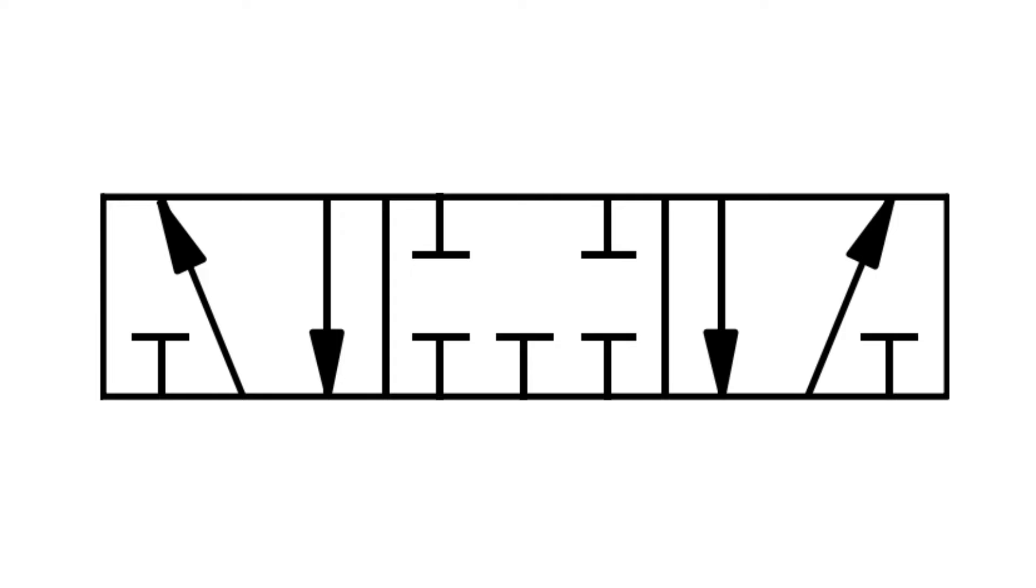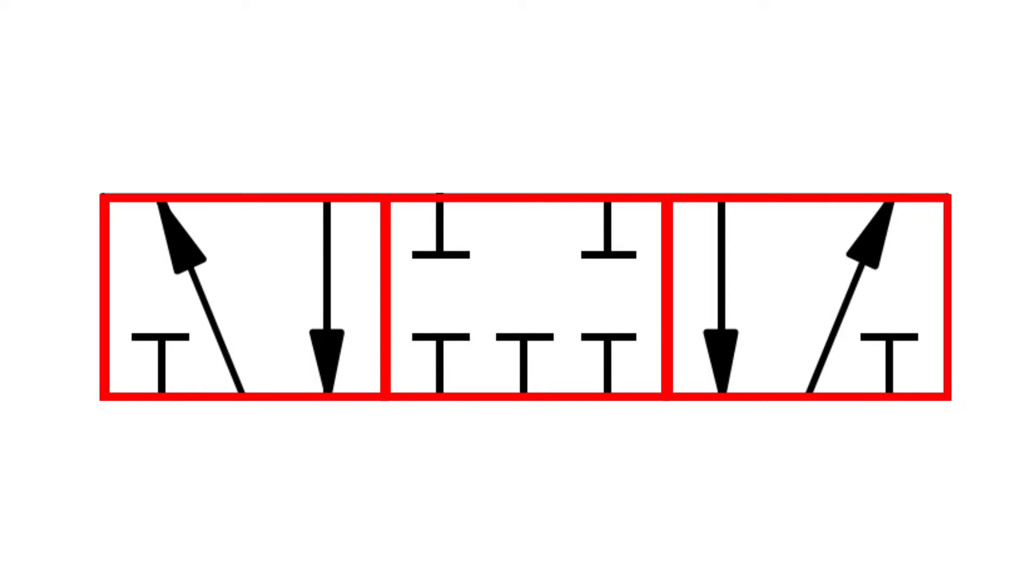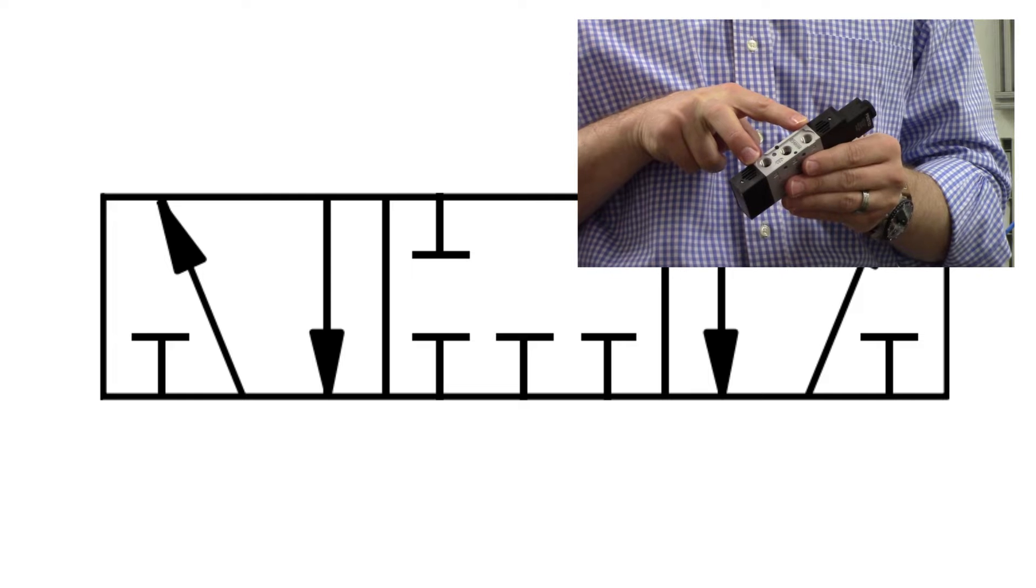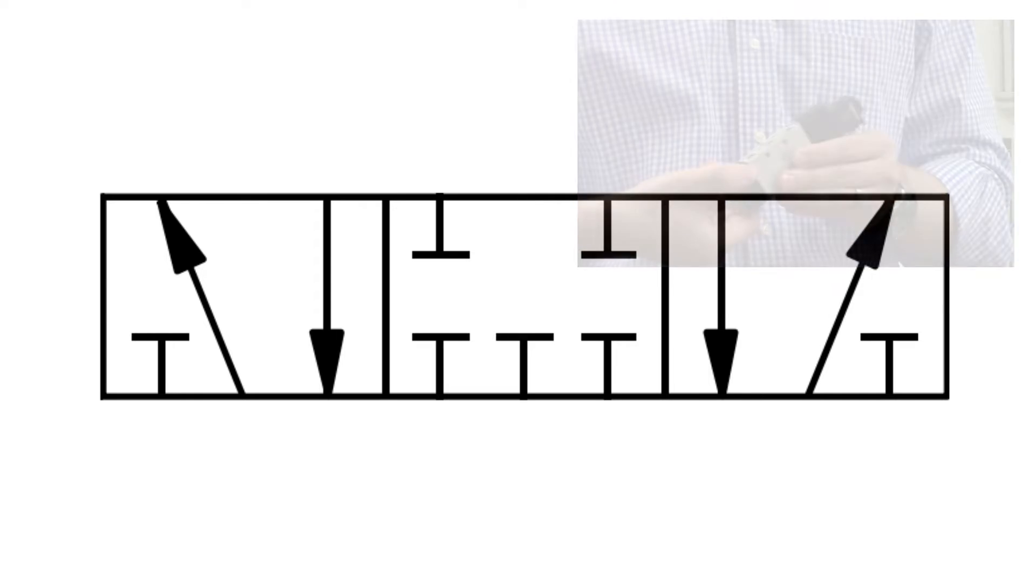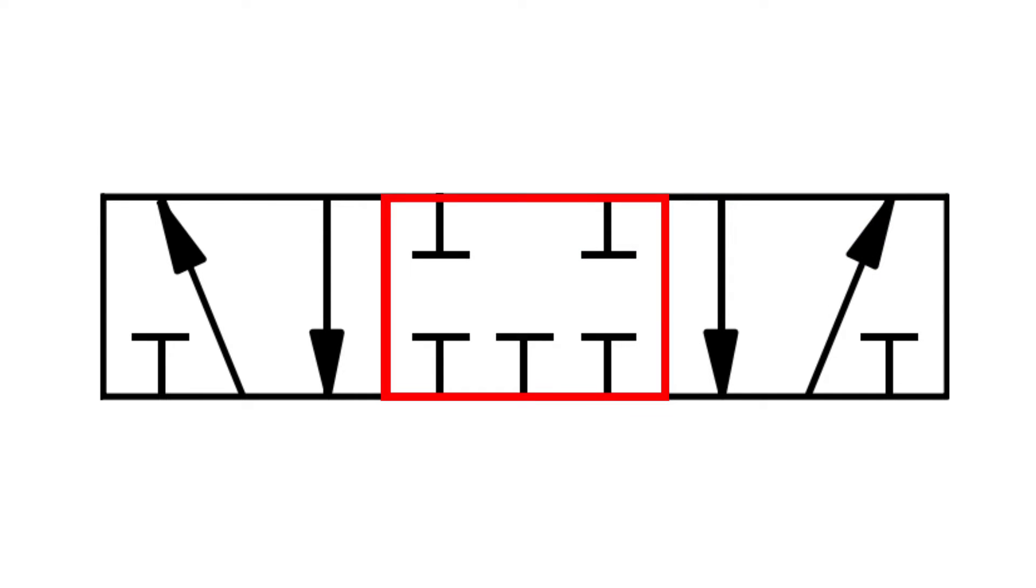A 5-3 valve is called a 5-3 because it has five ports and three possible positions. The two outer positions function the same way as a 5-2 valve, which we covered in this video. However, 5-3 valves also have a third position in the center, which can serve one of many unique functions.